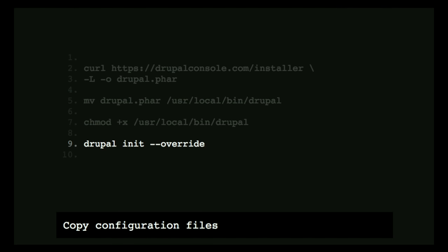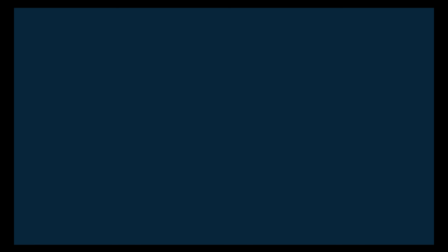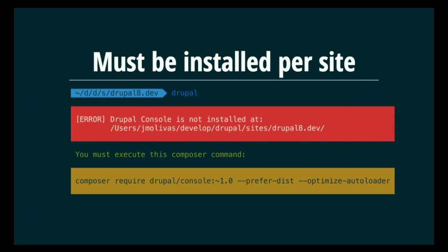We highly recommend you run the init command. This will allow you to copy configuration files to your system. Modifying or updating those files is also how you can change the behavior of the project — for instance, you can set a different language by modifying this file. And starting today, Drupal Console must be installed per site.